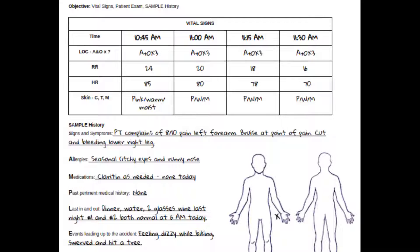The Objective component includes vital signs: time, level of consciousness, heart rate, respiratory rate, skin color, temperature, and condition. It will also include SAMPLE history — signs and symptoms, allergies, medications, past medical history, last in and last out, and the events leading up to the crisis.